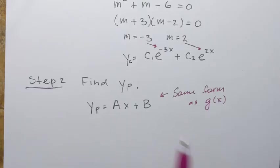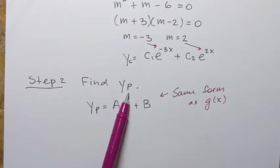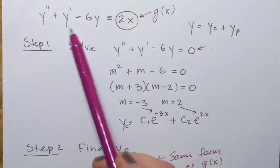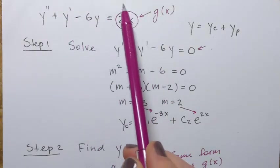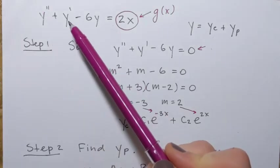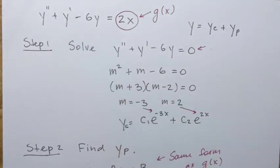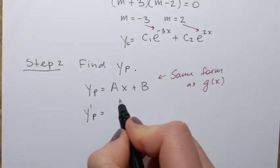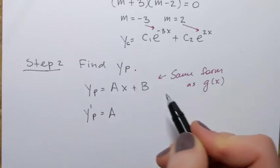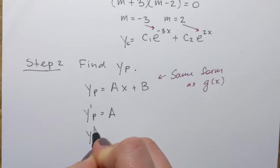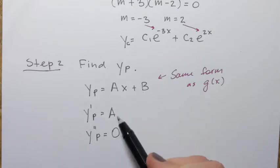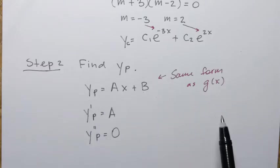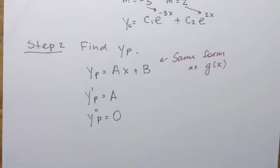Next we need to find the specific coefficients a and b. Since yp is a solution to our differential equation, it must satisfy it — so we plug it in. For that, we need to find its first and second derivatives. The first derivative is simply a, and the second derivative is zero, since the derivative of a constant is zero.